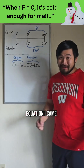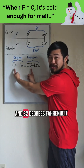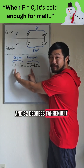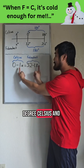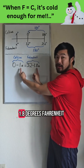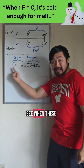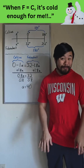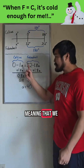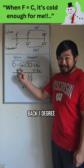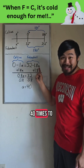Here's the equation I came up with. We're starting at 0 degrees Celsius and 32 degrees Fahrenheit. I know the answer is negative, so I'm going to subtract 1 degree Celsius and 1.8 degrees Fahrenheit the same number of times to see when these will match. When we solve for the variable, we get 40, meaning we need to go back 1 degree Celsius or 1.8 degrees Fahrenheit 40 times to get our answer.